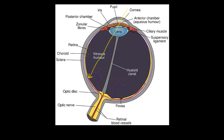Sometimes retinas can be damaged — they can have bleeding, or even become detached from the eye, called a detached retina. The laser light can be used to destroy lesions, stop bleeding, or weld the retina back onto the eye.